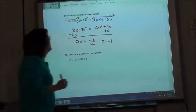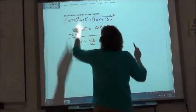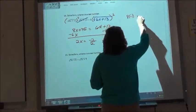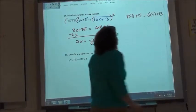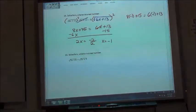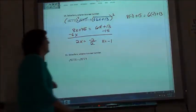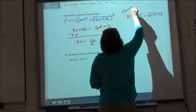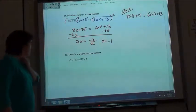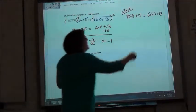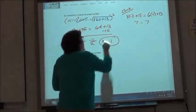Now, we always have to check our answers. So we want to make sure this is going to be equal to this. So we're going to say, is 8 times negative 1 plus 15 equal to 6 times negative 1 plus 13? Yes, it is, because I get 7 equals 7. So that means our answer is good. x does equal negative 1.